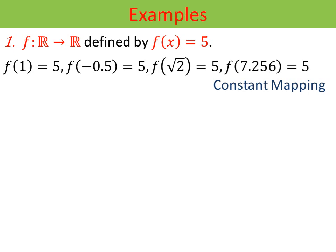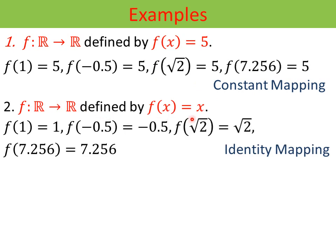Now I will give some more examples. First: f(x) = 5 is called a constant mapping, because whatever the input — 1, -0.5, 7.256, √2 — every element has image 5. Next: f(x) = x is called the identity mapping, because the pre-image and image are equal. This is an important mapping with many applications discussed in the next videos.